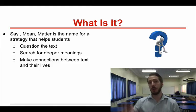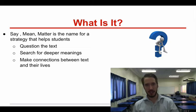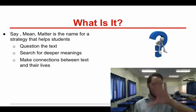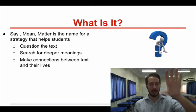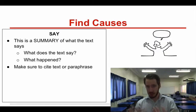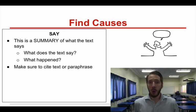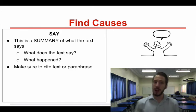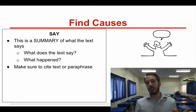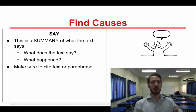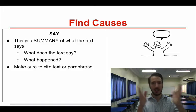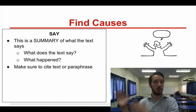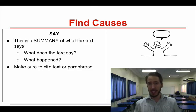What you're going to do is make three columns: one column is going to be Say, one will be Mean, and one will be Matter. You can do this in paper format or electronic format — that's fine — as long as it's graphically organized so that you can understand what the text says, what it means, and why it matters.